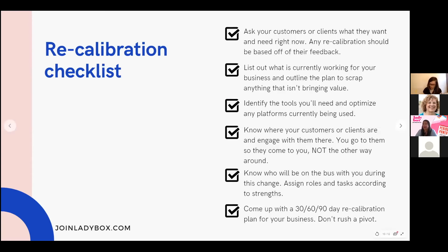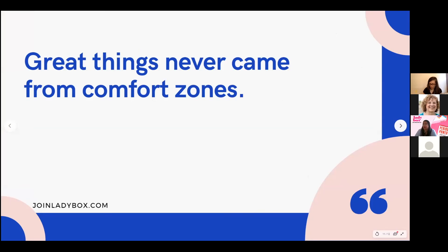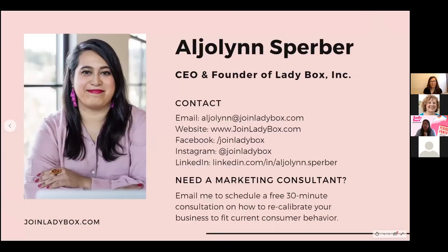Having the right people on your team is key — assign roles based on people's strengths and skill sets. Going online may be new for some, but push yourself and lean into that discomfort. Many businesses have been doing it since lockdown with great results. For example, Indigo Plum usually holds an annual in-person girls' night out, but they shifted it to virtual and still had revenue come in. There's an opportunity if you look for it.